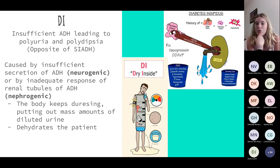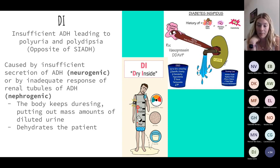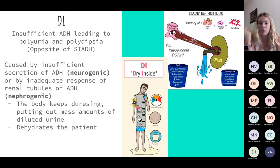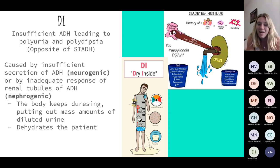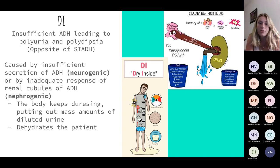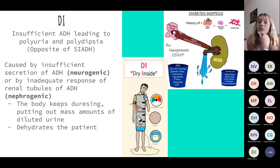On the opposite, we have diabetes insipidus — think dry inside. My body is producing little to no ADH, so the body simply cannot hold on to water. Whatever goes in is going to go right out. When you assess these patients, they're going to be very dehydrated — dry skin turgor, really, really thirsty. But what's interesting is that even though they appear dehydrated, they are putting out mass amounts of very dilute urine. Why? Their body simply cannot hold on to the water. A student asked: for SIADH, is it diluted or concentrated urine? It's very concentrated urine for SIADH.